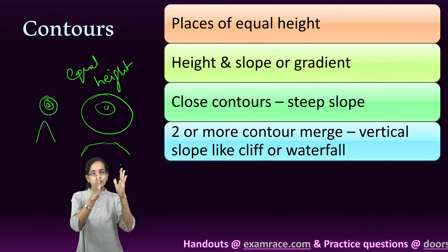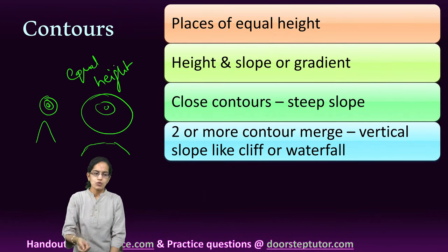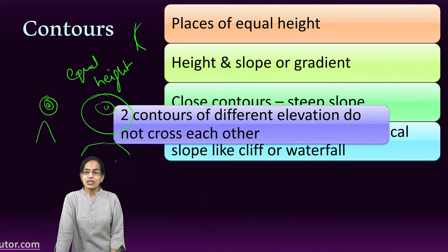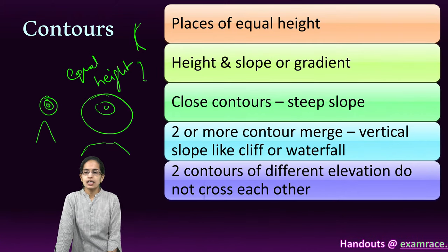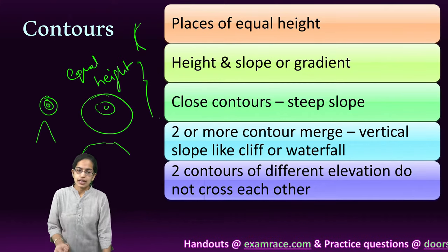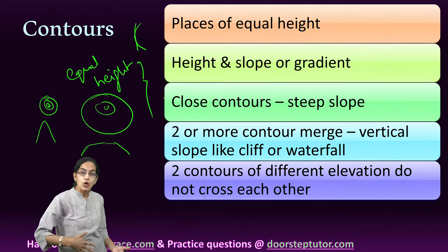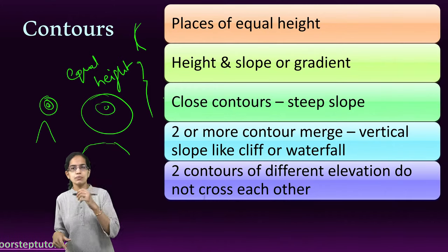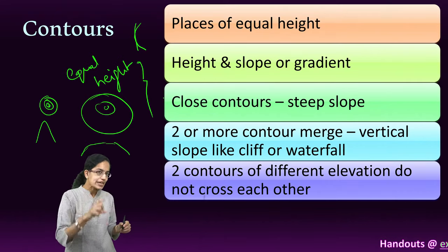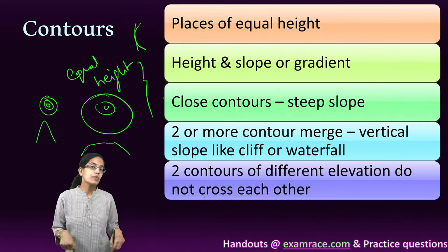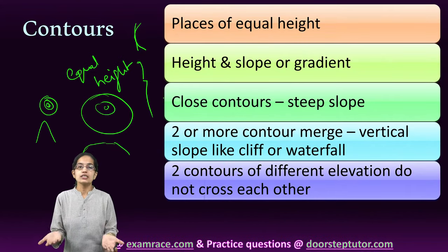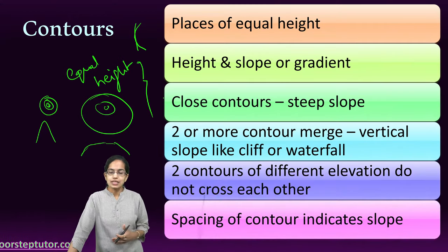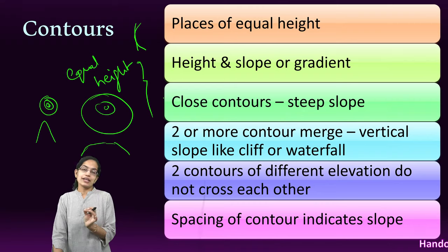When contours merge, a cliff phenomenon is seen — either a cliff or a steep gradient with a waterfall. There is a fixed contour interval, and when we explain landforms by contour we call it a contour map, not a normal topographical map. The spacing of contours is a very important indicator of the slope of the region.